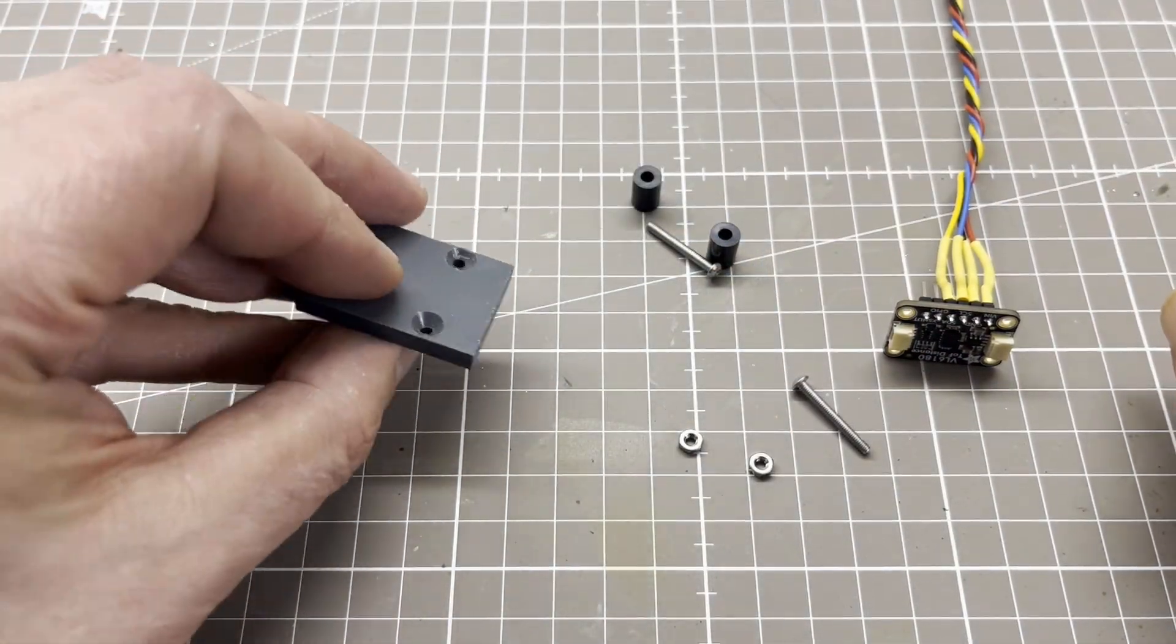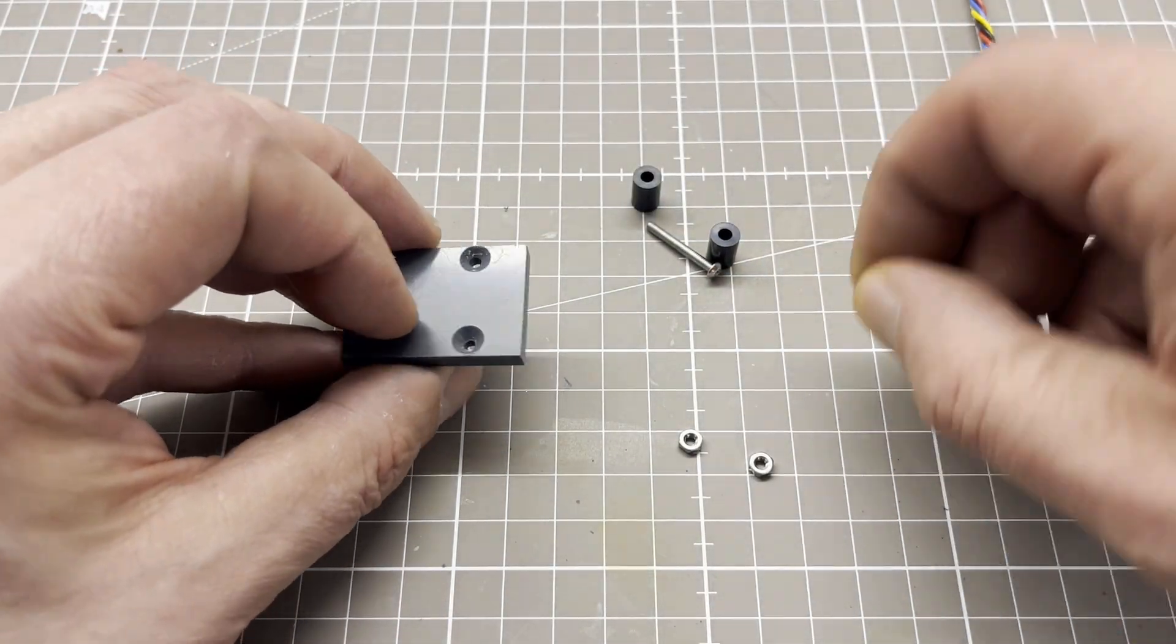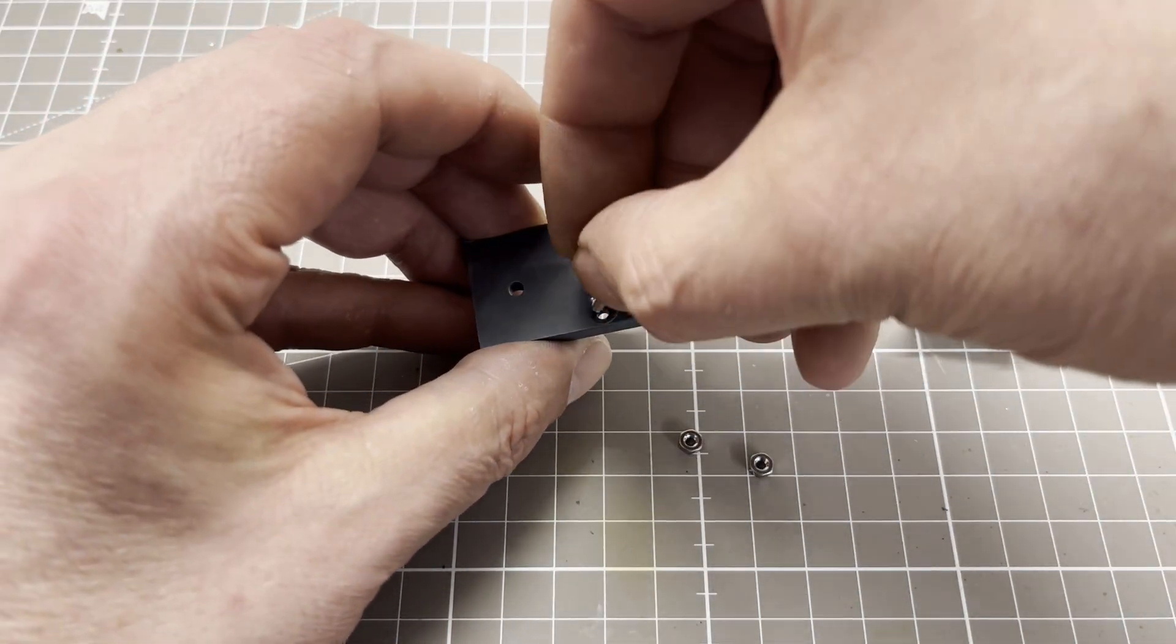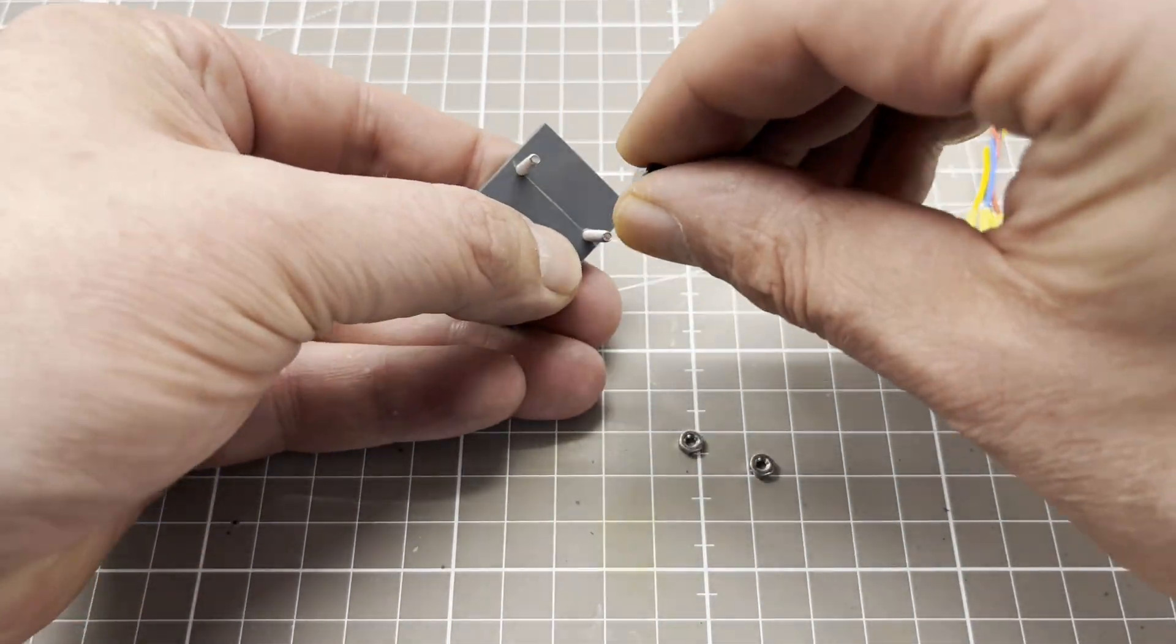In order to be able to attach the time of flight sensor to the T-slot aluminum profile, I made an adapter from a piece of PVC sheet.